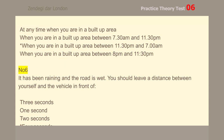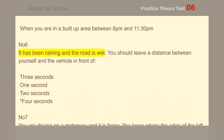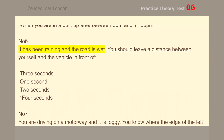Number 6. It has been raining and the road is wet. You should leave a distance between yourself and the vehicle in front of 4 seconds.